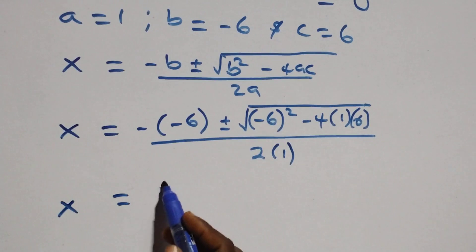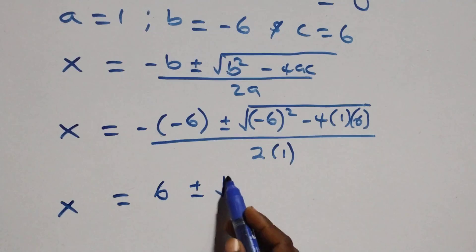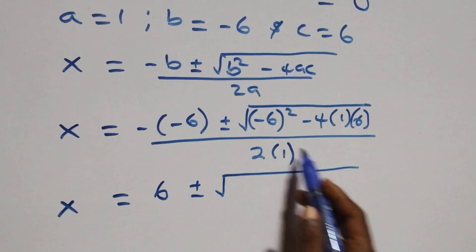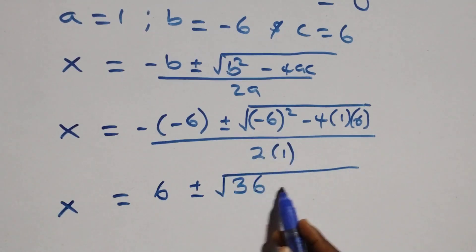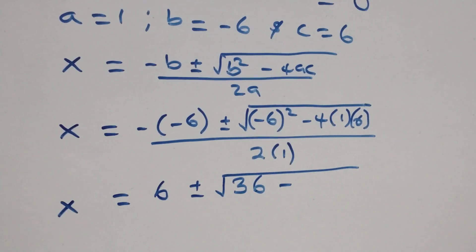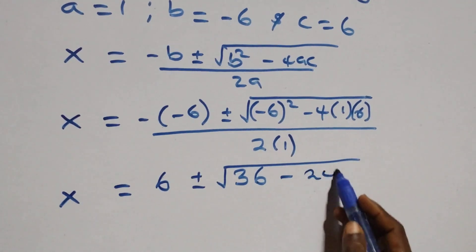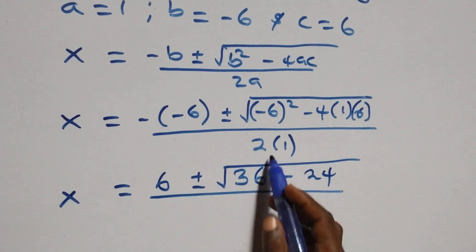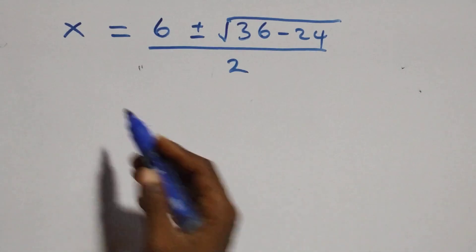This gives x equals six plus or minus square root of 36 minus four times one times six, which is 36 minus 24, all over two.